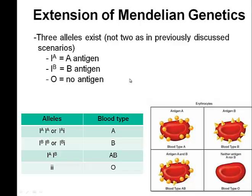We use the term allele and gene interchangeably because alleles are alternate forms of a gene. We're going to use the representation capital I superscript A and capital I superscript B to represent the A allele and the B allele. The O allele is represented by a lowercase i, and it codes for no antigen whatsoever.